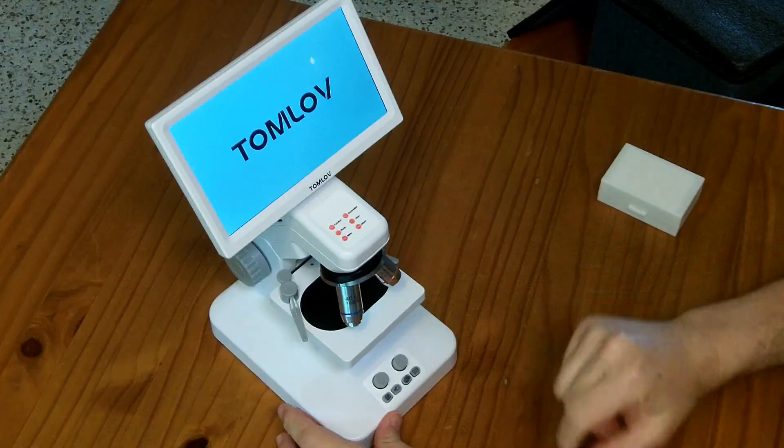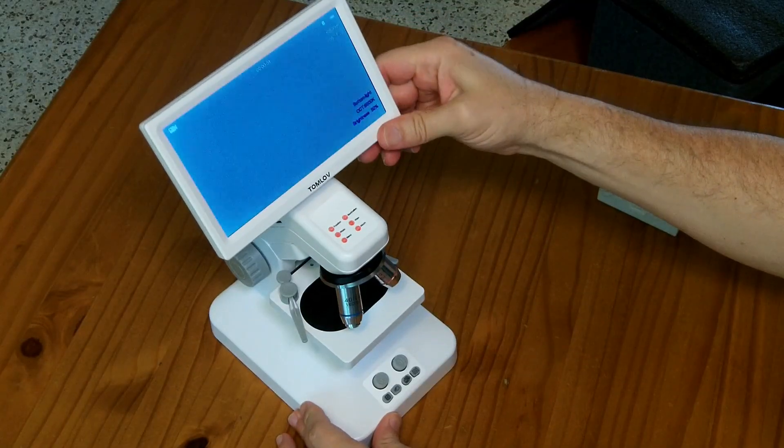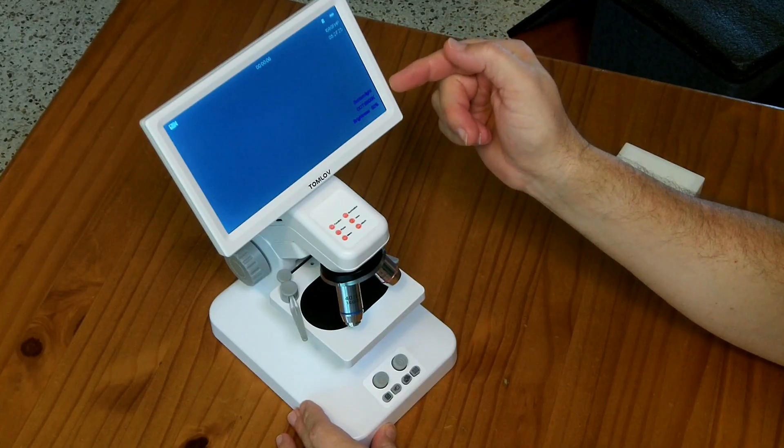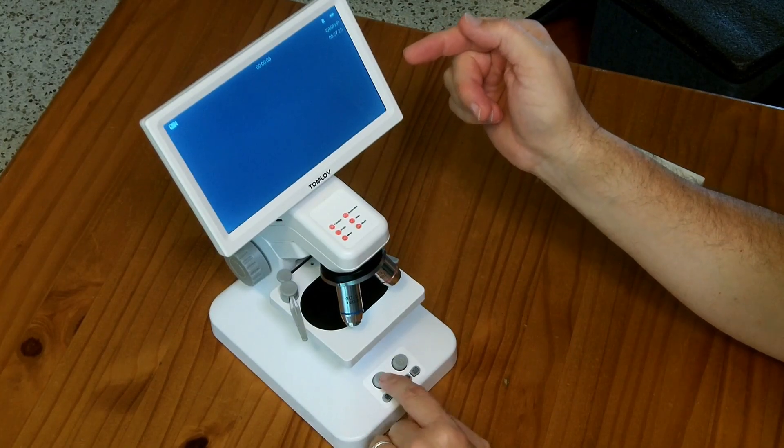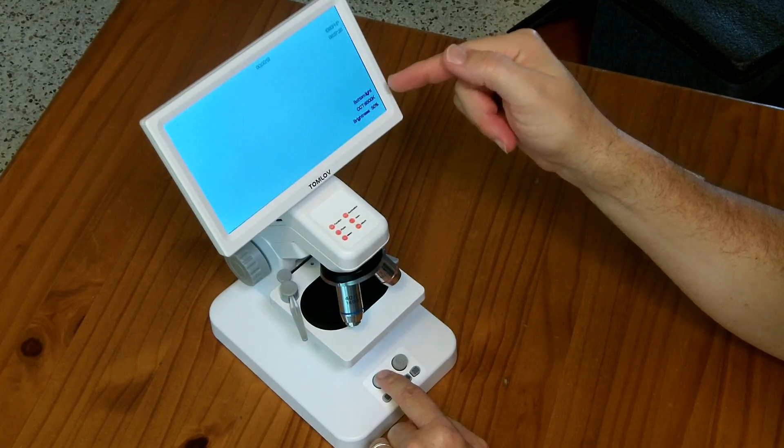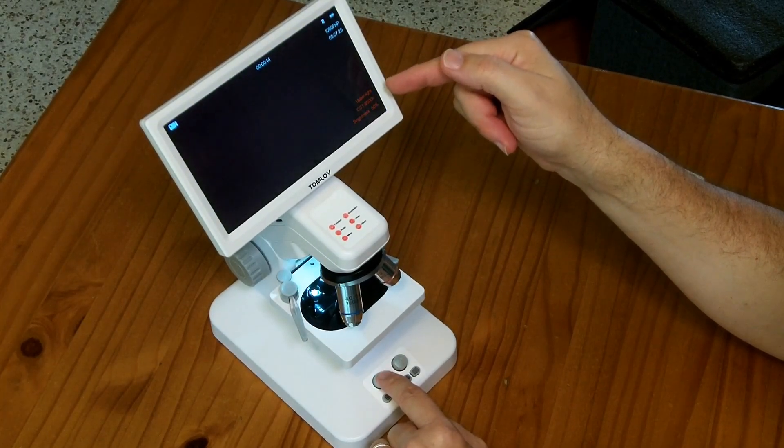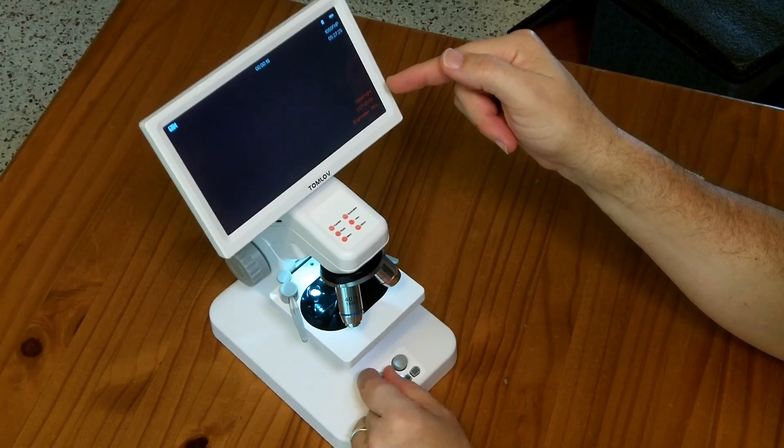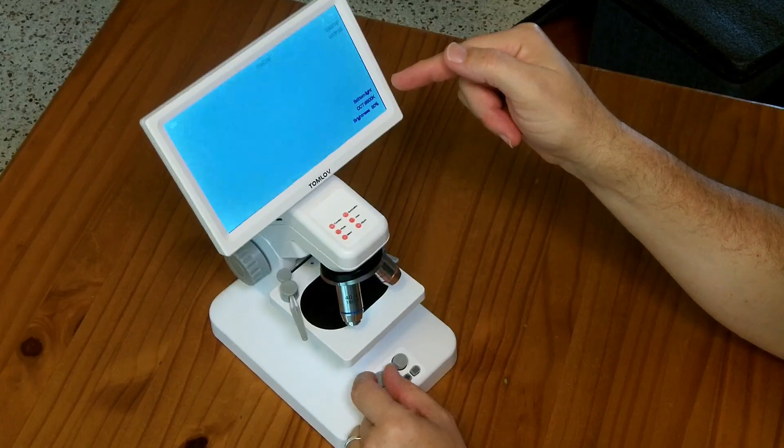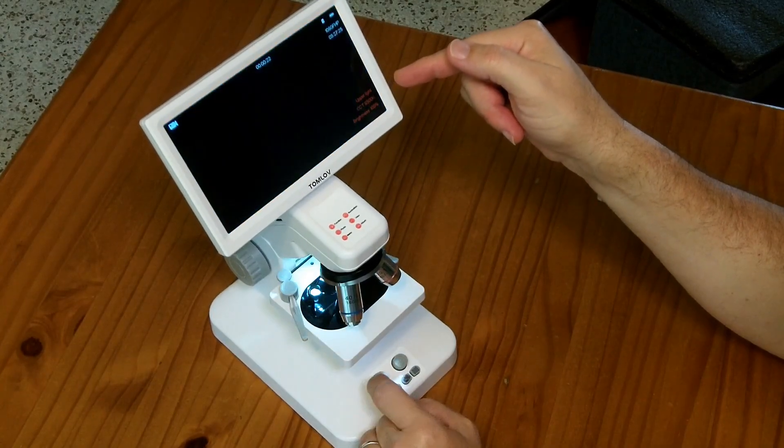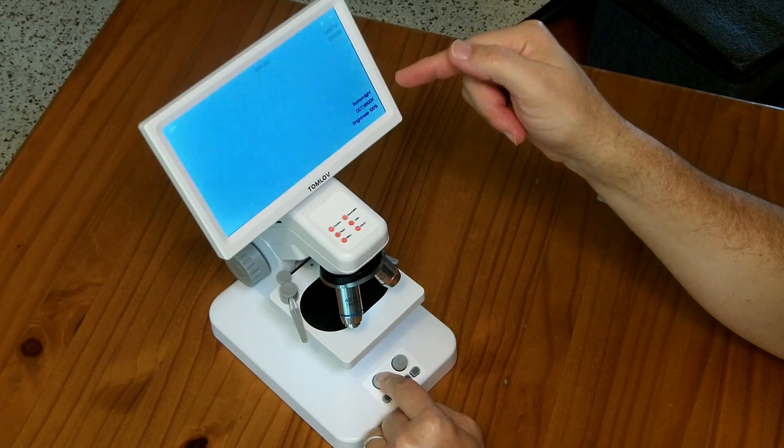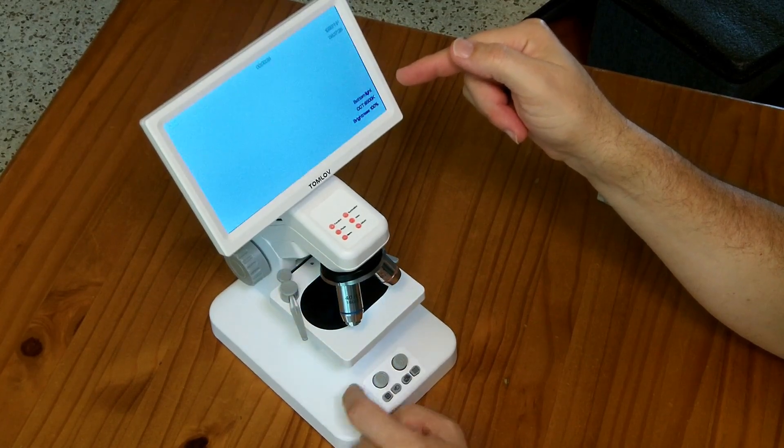The screen is lighting up. It says it's on the bottom light, CCT6500K. So I can push the button on the light button to change between the bottom light and the upper light. I can twist it to change the brightness. I don't know if there's a way to change the color temperature. It doesn't look like I can have both of them at the same time. I have to choose either the upper light or the bottom light.